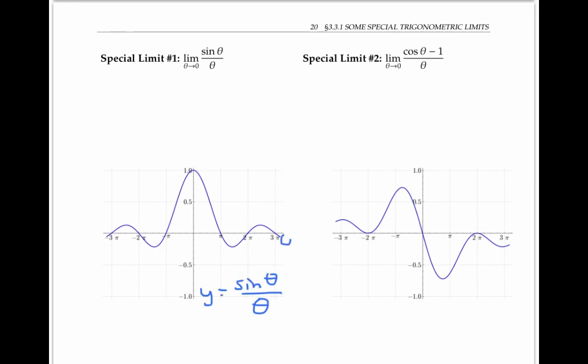So here's the theta axis, and here's the y axis. And you can see that as theta goes to zero from either the right or the left, it's looking like the y value is going to one.